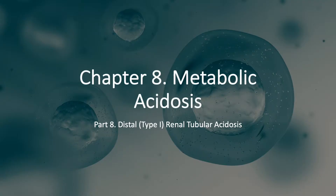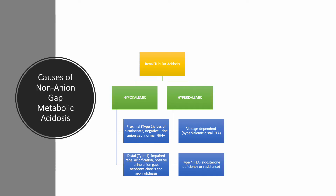We are still on Chapter 8, Metabolic Acidosis. Today we are going to discuss distal or type 1 renal tubular acidosis. The causes of non-anion gap metabolic acidosis can be renal or extra-renal. Renal causes include advanced chronic kidney disease, stages 4 or 5, or renal tubular acidosis. RTA can be hypokalemic, as in proximal or type 2 RTA, or distal or type 1 RTA. RTA can also be hyperkalemic: voltage-dependent, also called hyperkalemic distal RTA, or type 4 RTA due to aldosterone deficiency or resistance — the subject of the next lecture.